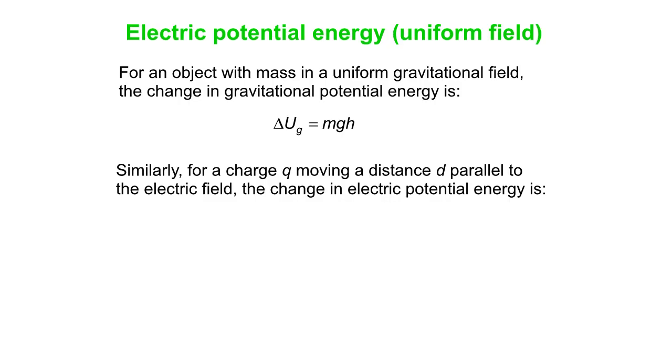And you can write down a similar equation, the analogous equation for a charge moving a distance D parallel to the electric field. If the electric field is uniform, then the change in electric potential energy is, well, M goes to Q, G goes to E. And we could have kept H if we felt like it, but here we're just using D to symbolize the distance.